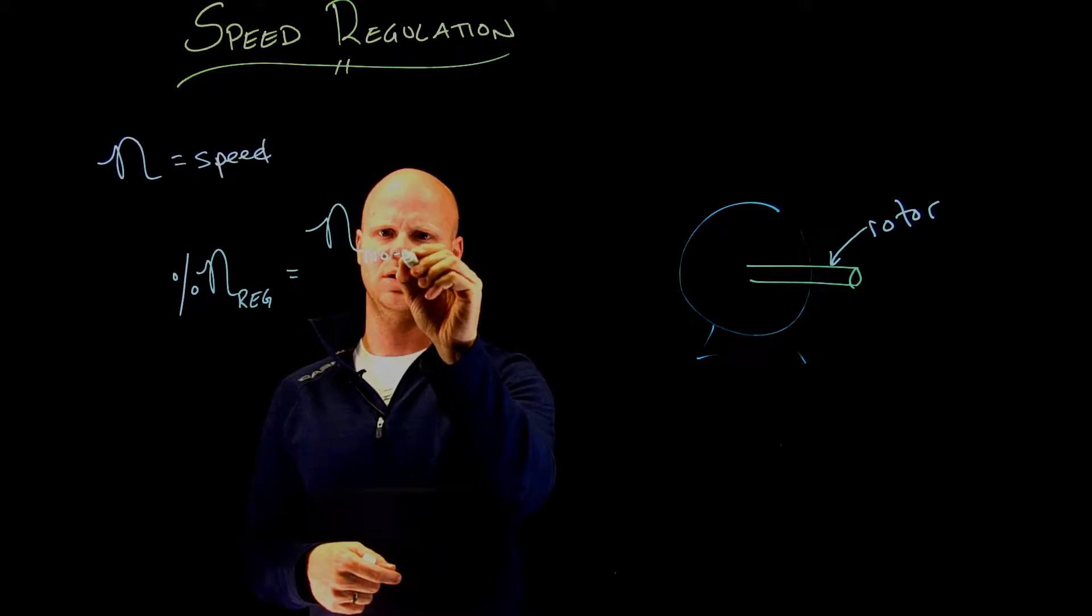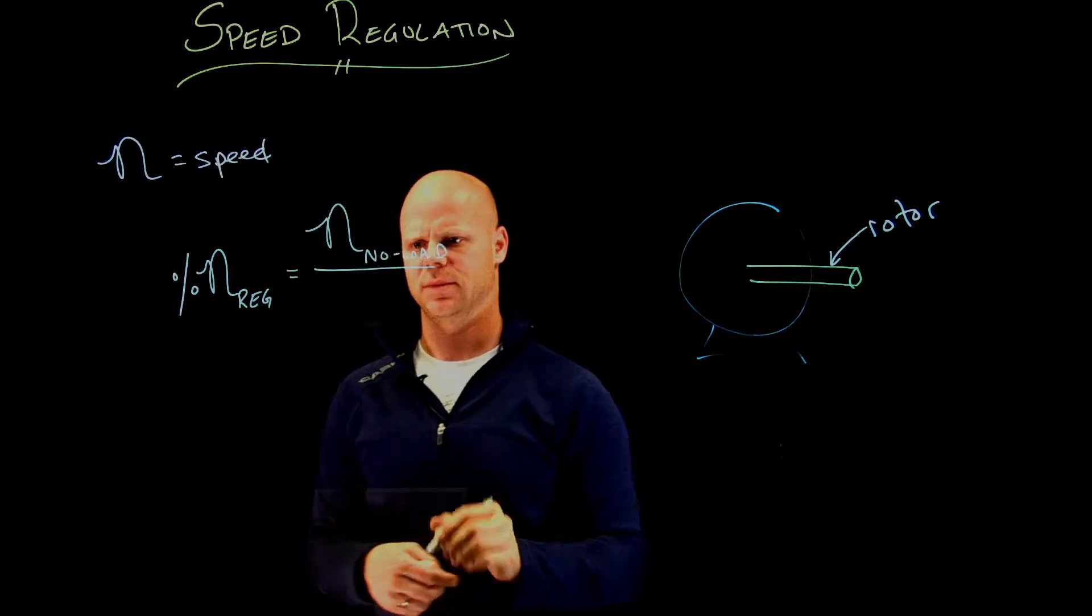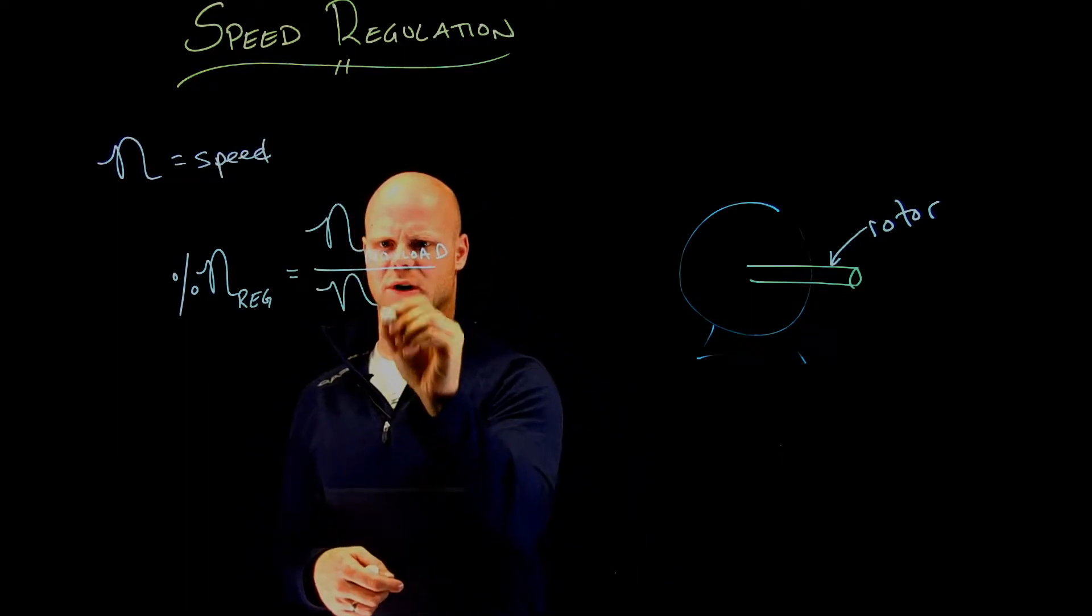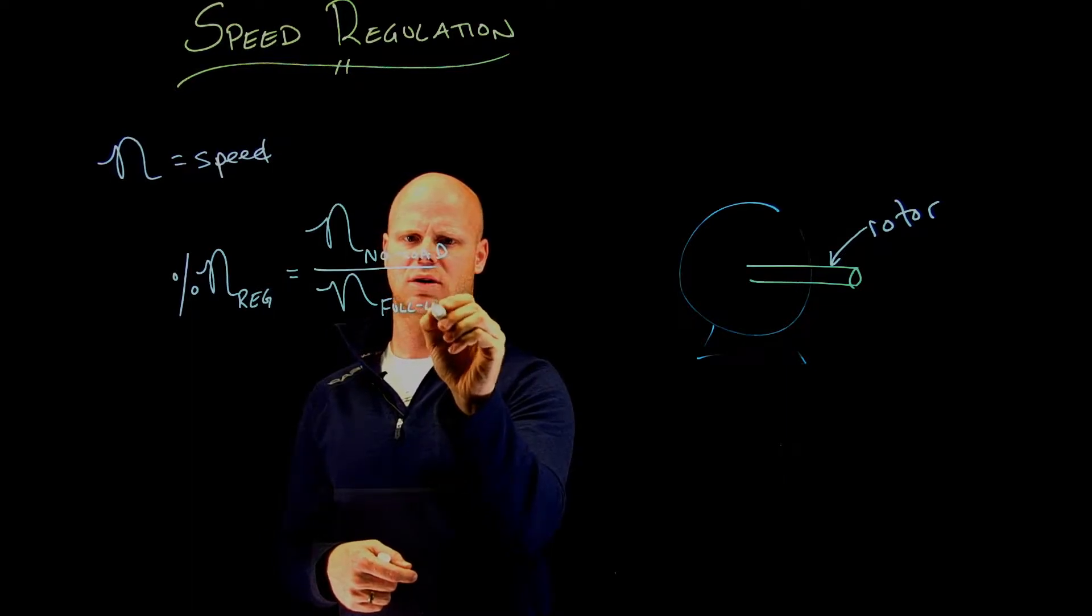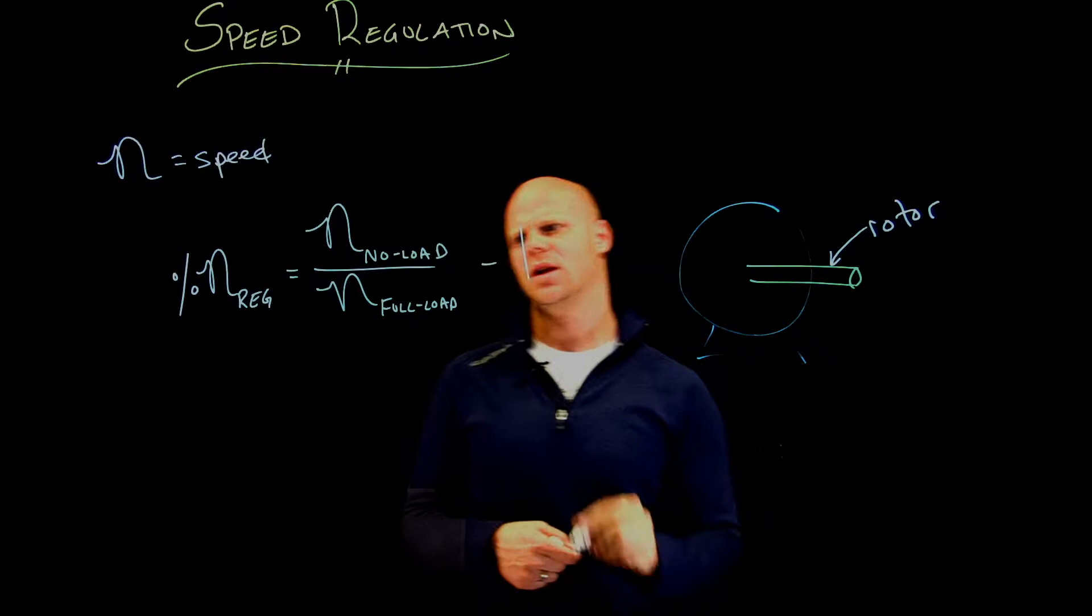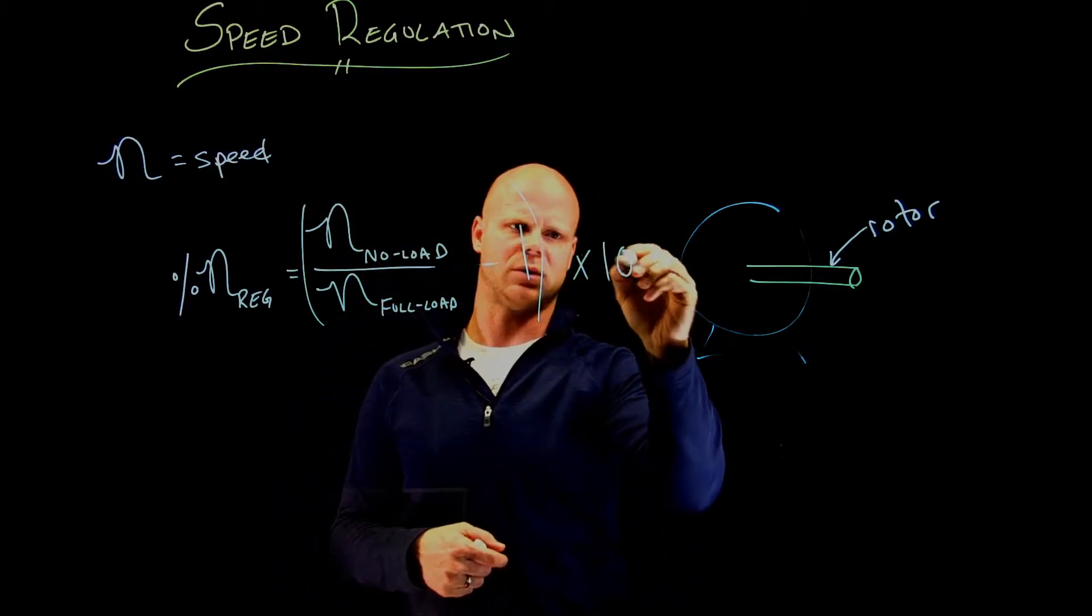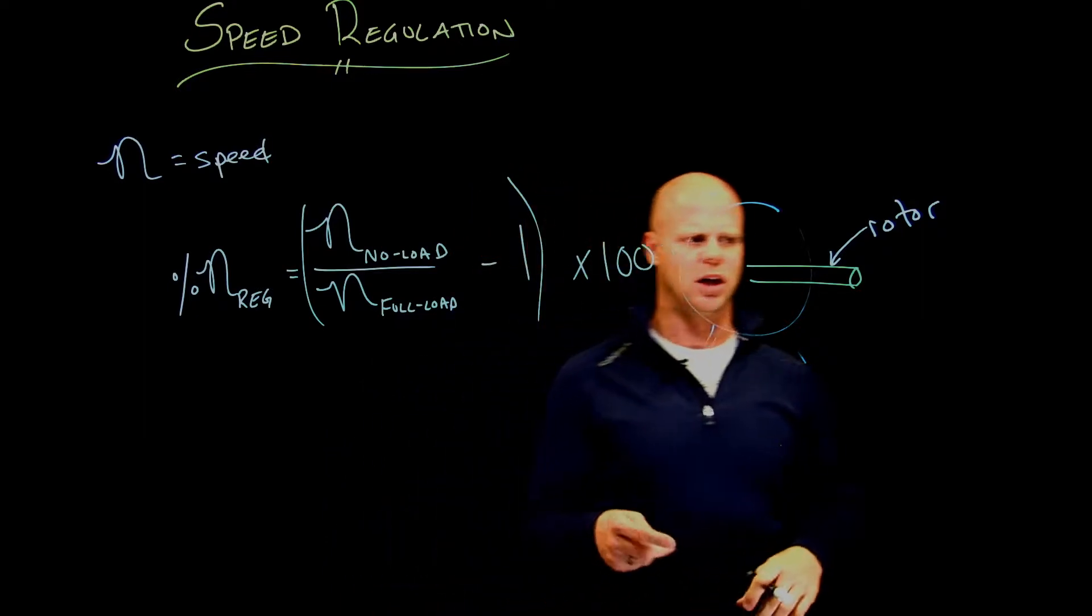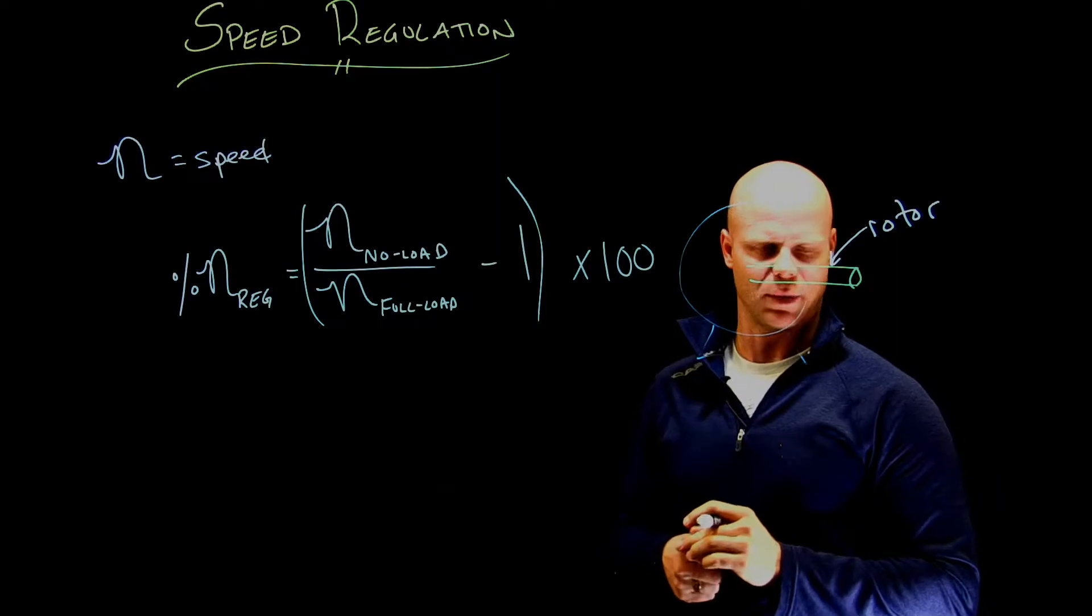no-load divided by the speed of my motor at full-load speed, minus 1. If you want to express this as a percentage, we'll times that by 100. A lot of times I just remove this times 100 and move the decimal place in my head.